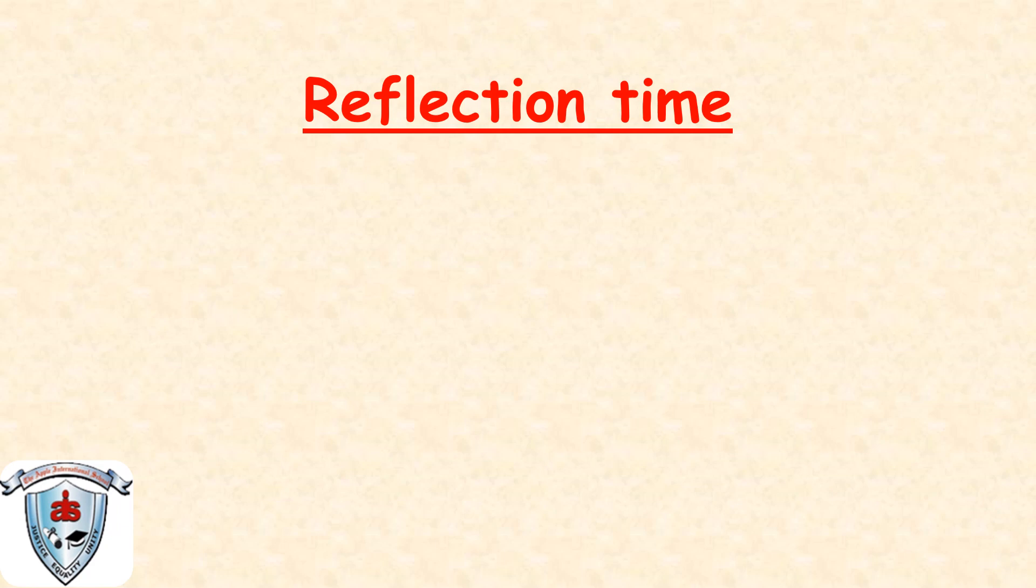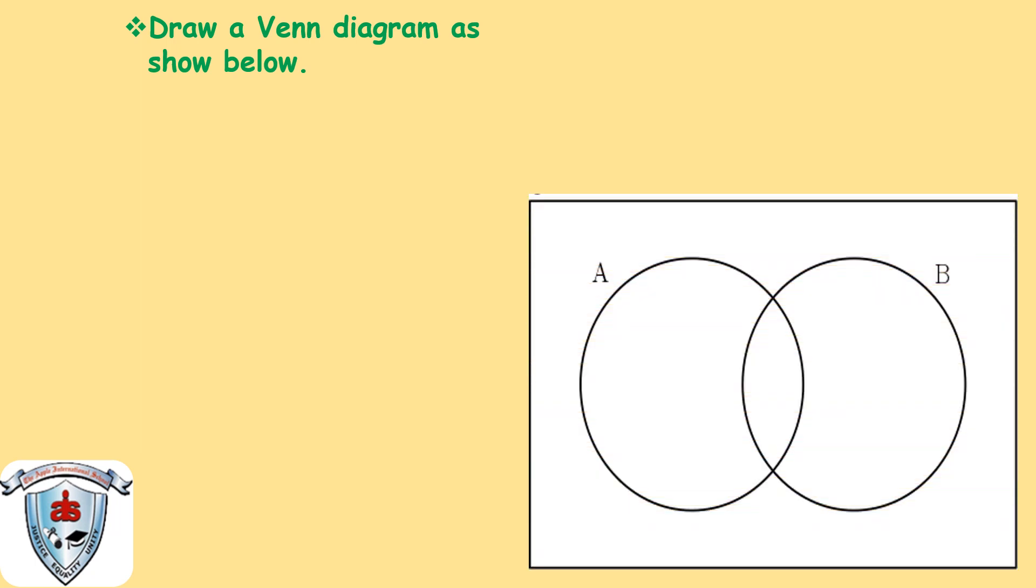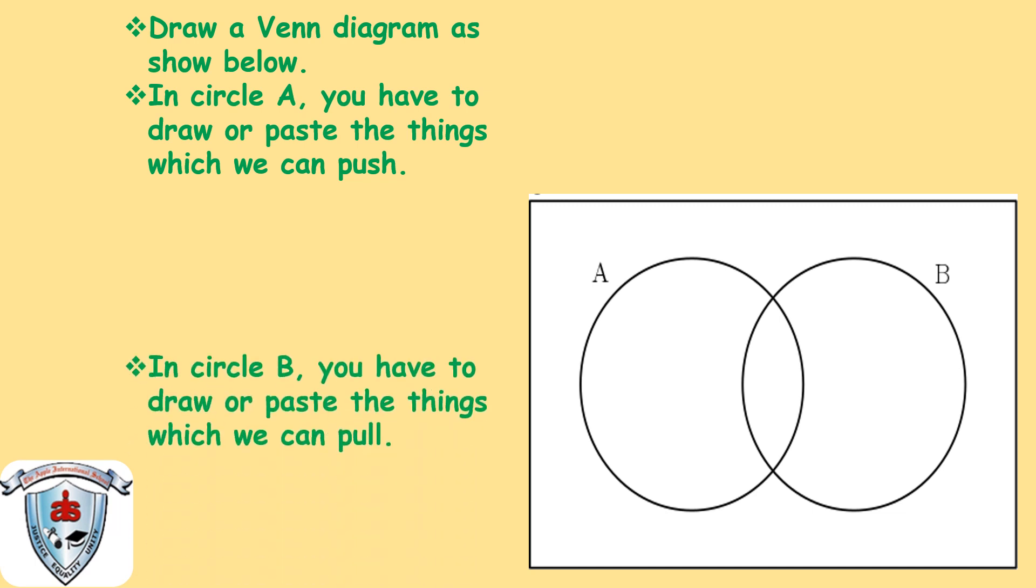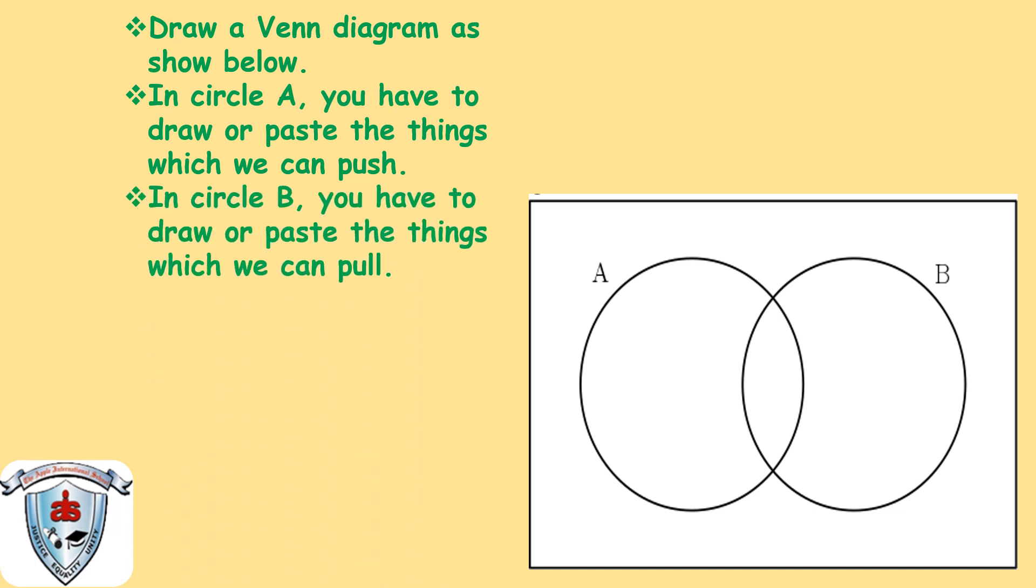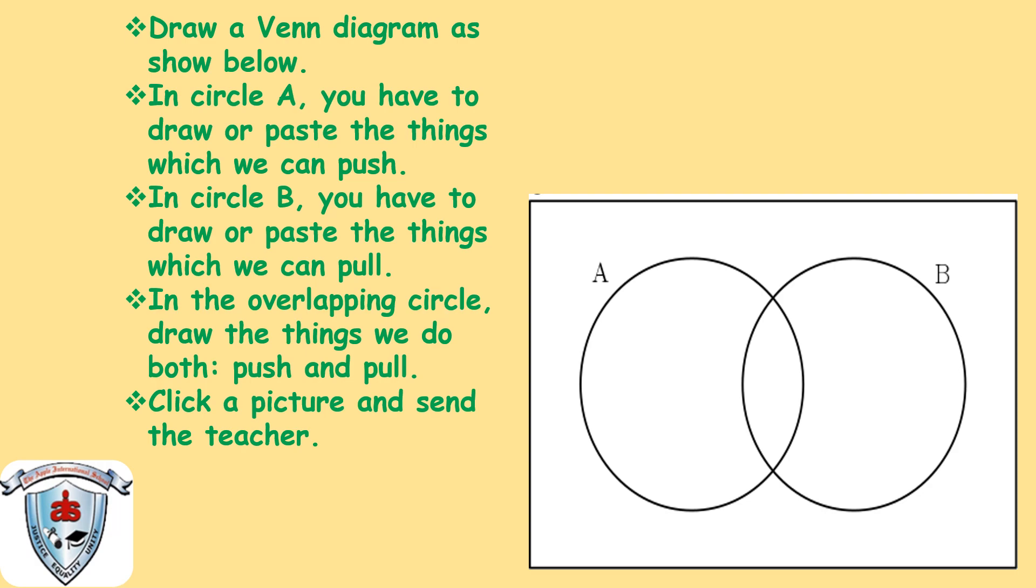Reflection time. Now, draw a Venn diagram as shown below. Like this. In circle A, you have to draw or paste the things which we can push. And in circle B, you have to draw or paste the things which we can pull. In the overlapping circle, draw the things we do both push and pull. Click a picture and send the teacher your activity.